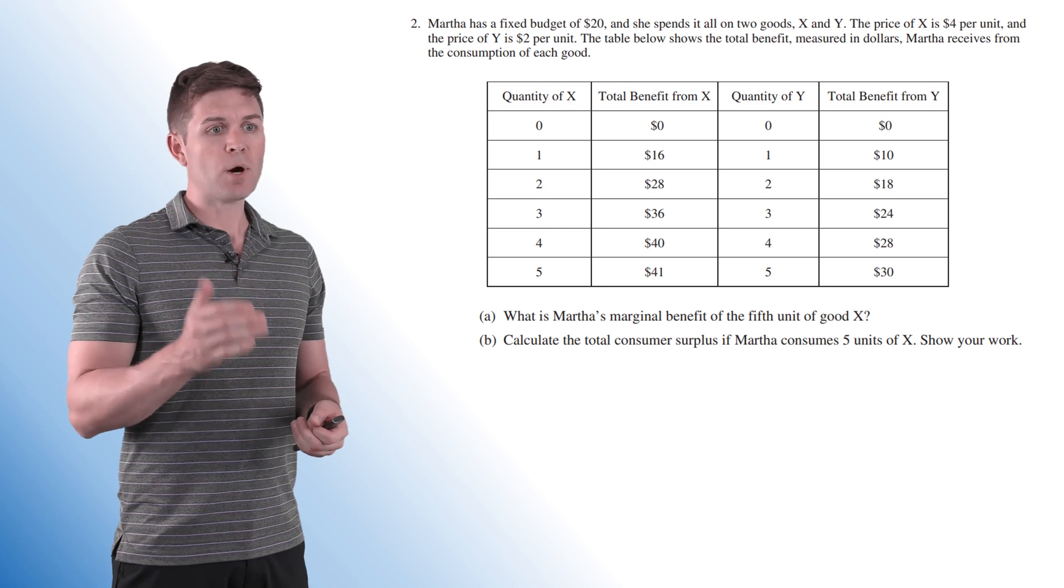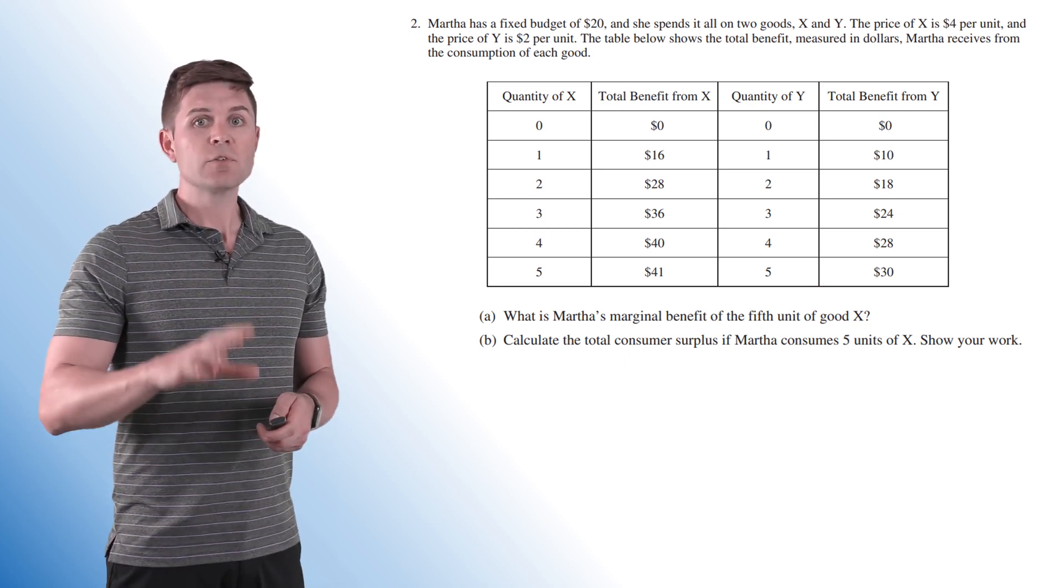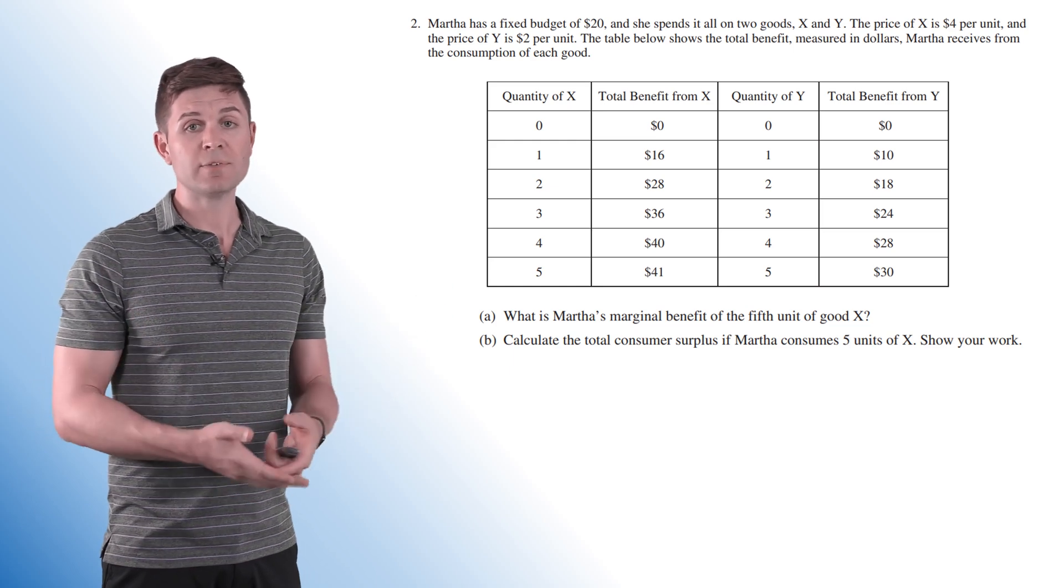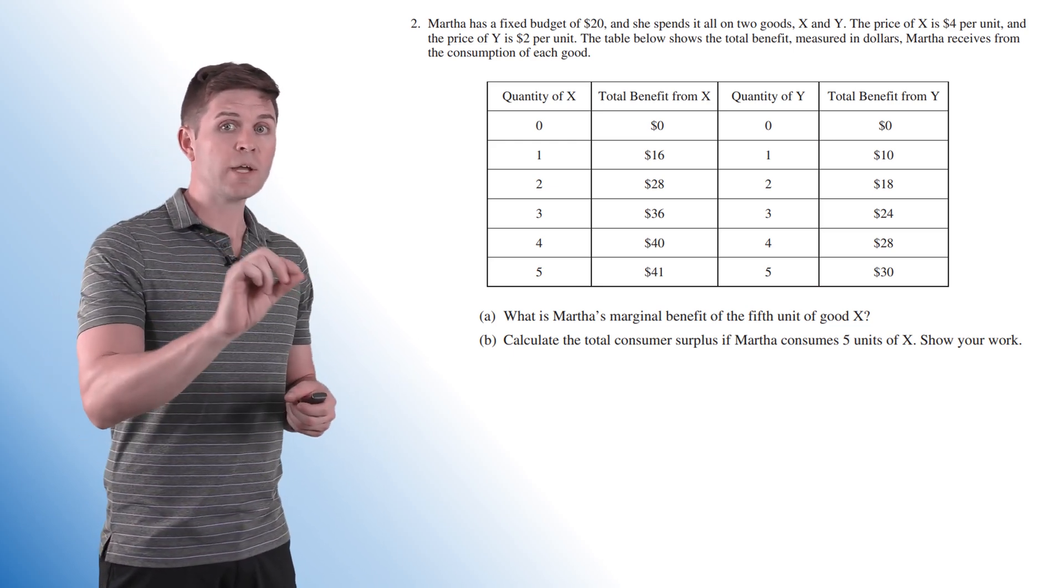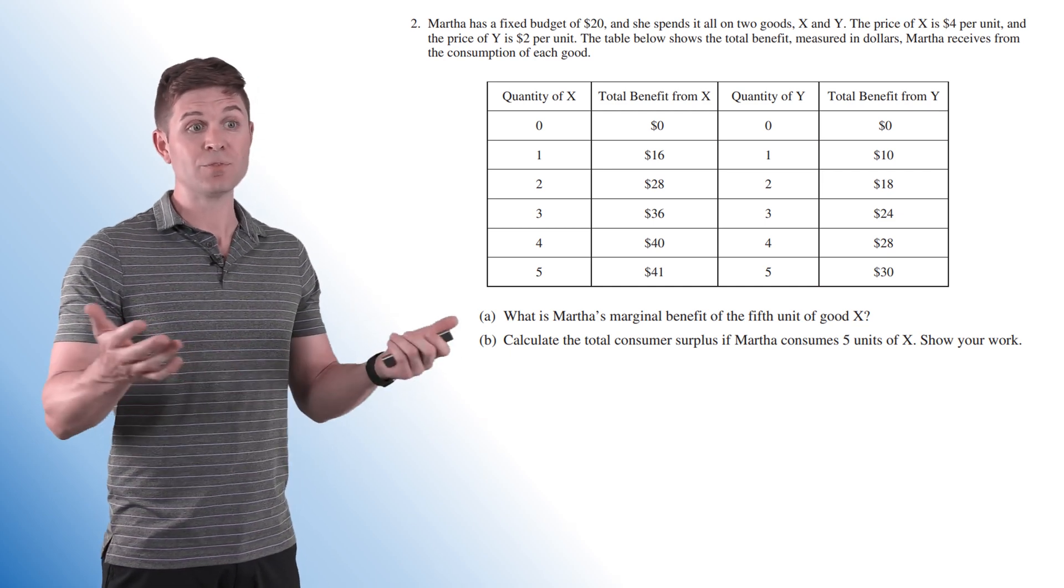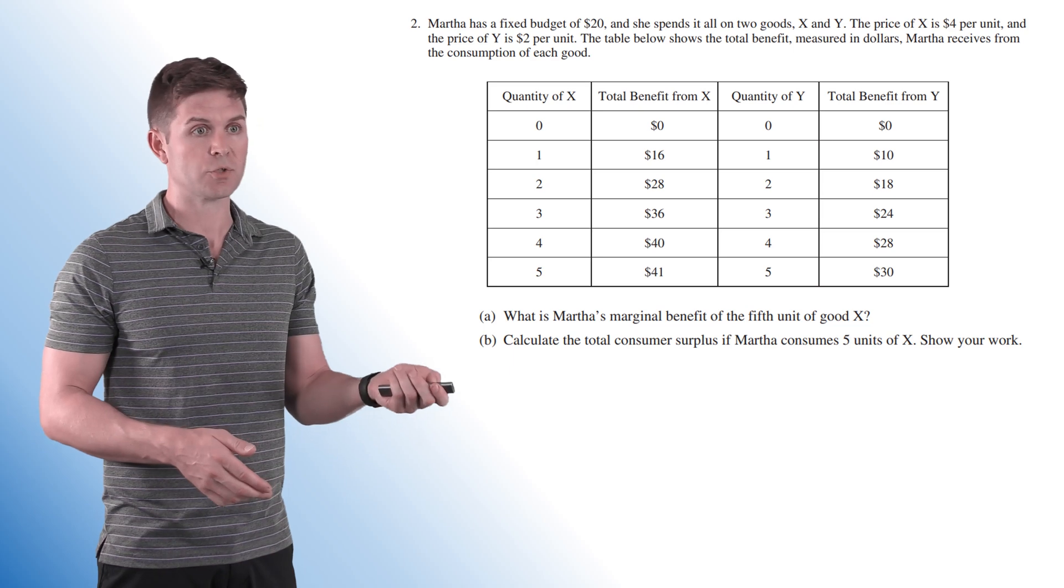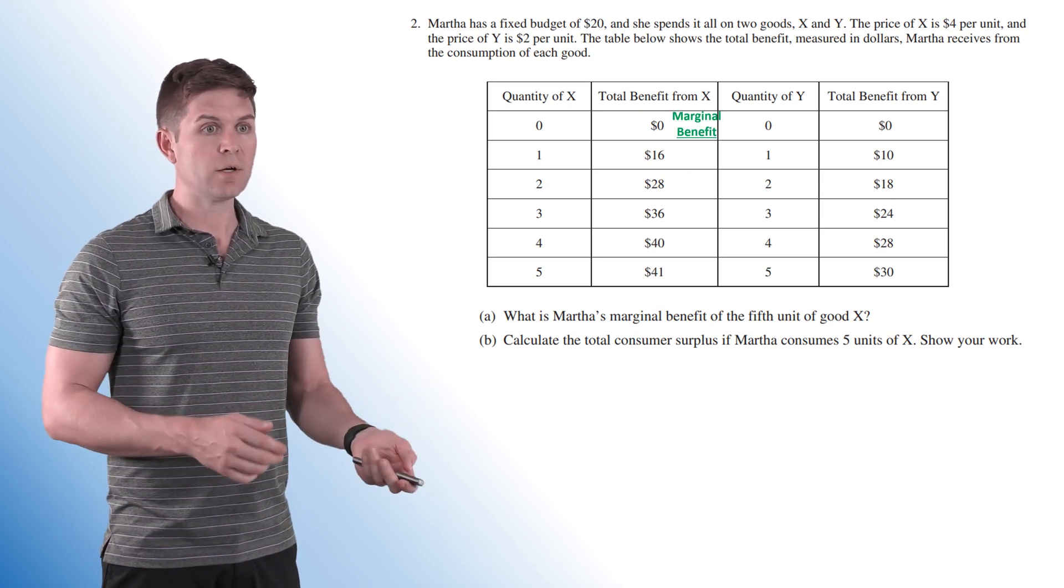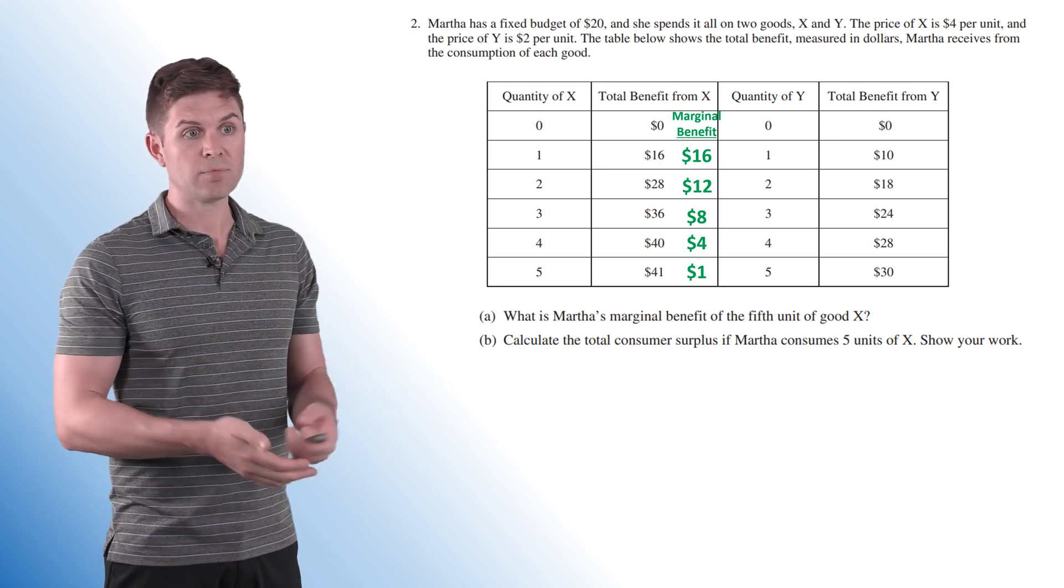All right, so what is Martha's marginal benefit of the fifth unit of good X? Real quick and easy, but we need to establish what the marginal utility is. Remember, on these types of questions, you always look at what the labels are for the table. In this case, we've got total benefit, not marginal benefit. So we need to calculate marginal. So our marginal benefit here, just the change in total benefit as we go down: 16, 12, 8, 4, and 1.